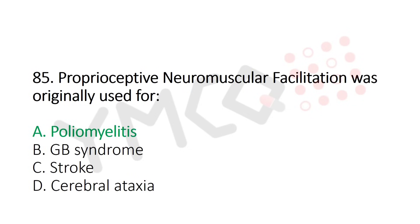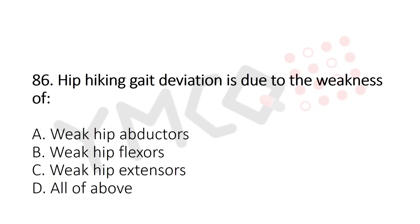Question 86: Hip hiking gait deviation is due to the weakness of — option A: weak hip abductors, option B: hip flexors, option C: weak hip extensors, option D: all of the above. The answer is option B: hip flexors, though in some textbooks it is listed as weak hip abductors.